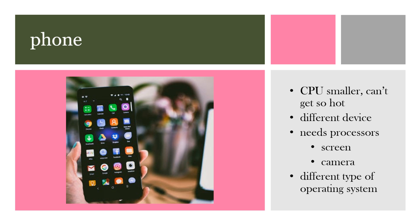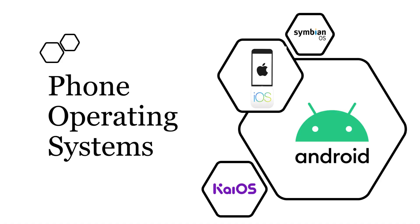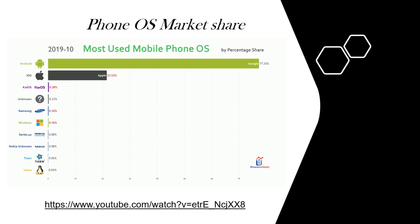A phone is a different device — it needs a smaller CPU, can't get too hot, and can't perform as many operations as quickly, so it needs processors for different parts. With advanced screens and cameras, a phone needs a different type of operating system. You're probably familiar with the two main ones: the iPhone with iOS, and Android. Looking at market share, Android and iOS have most of it, but KaiOS has reached third place — which, though seemingly small, still represents over a hundred million users.